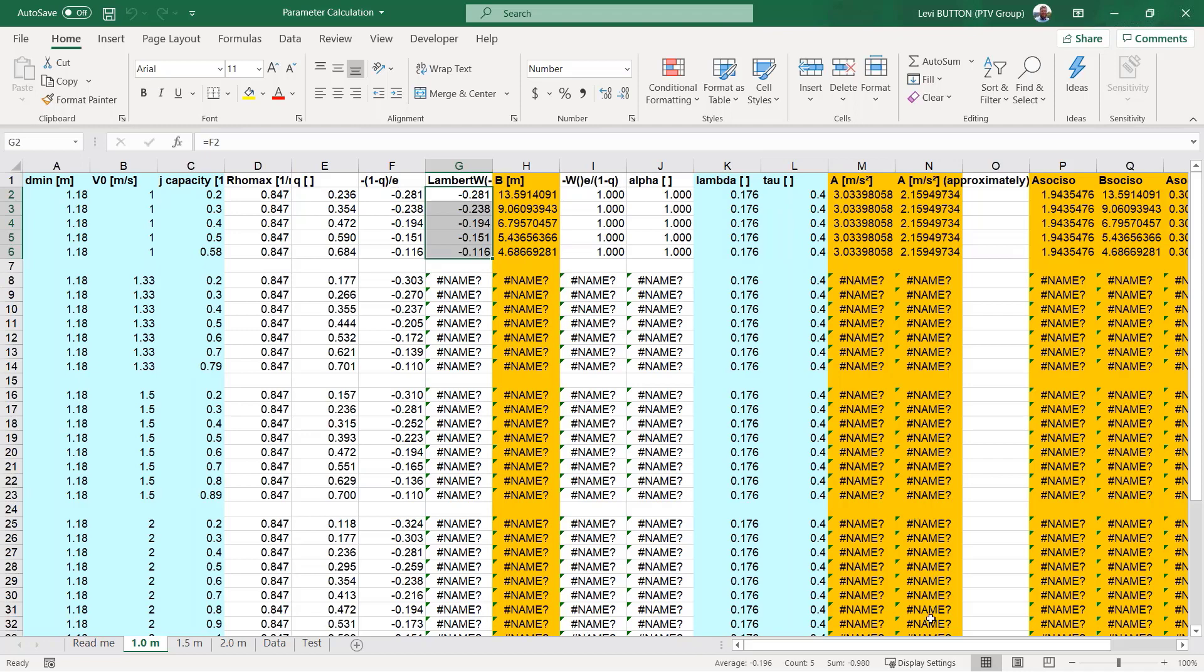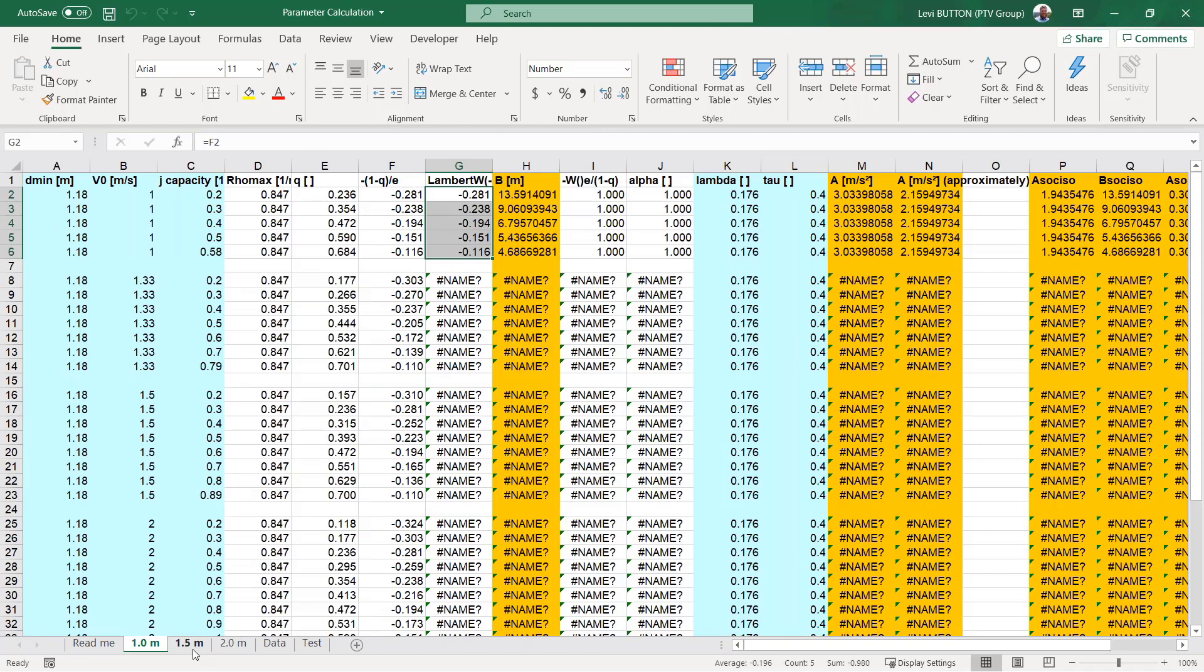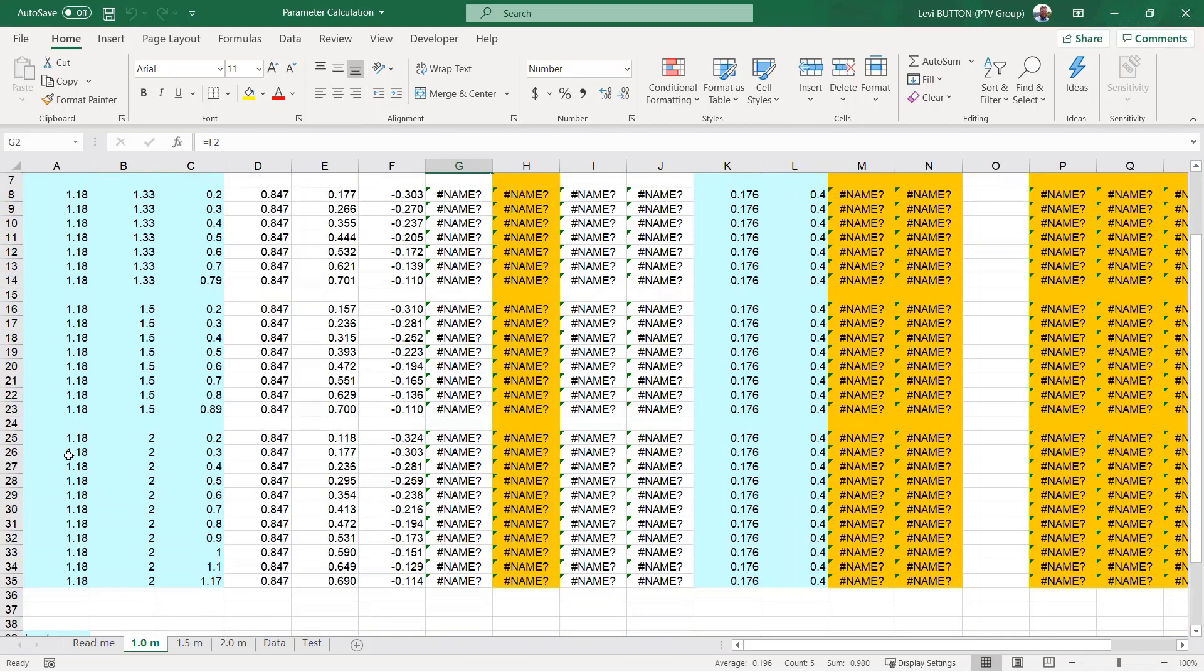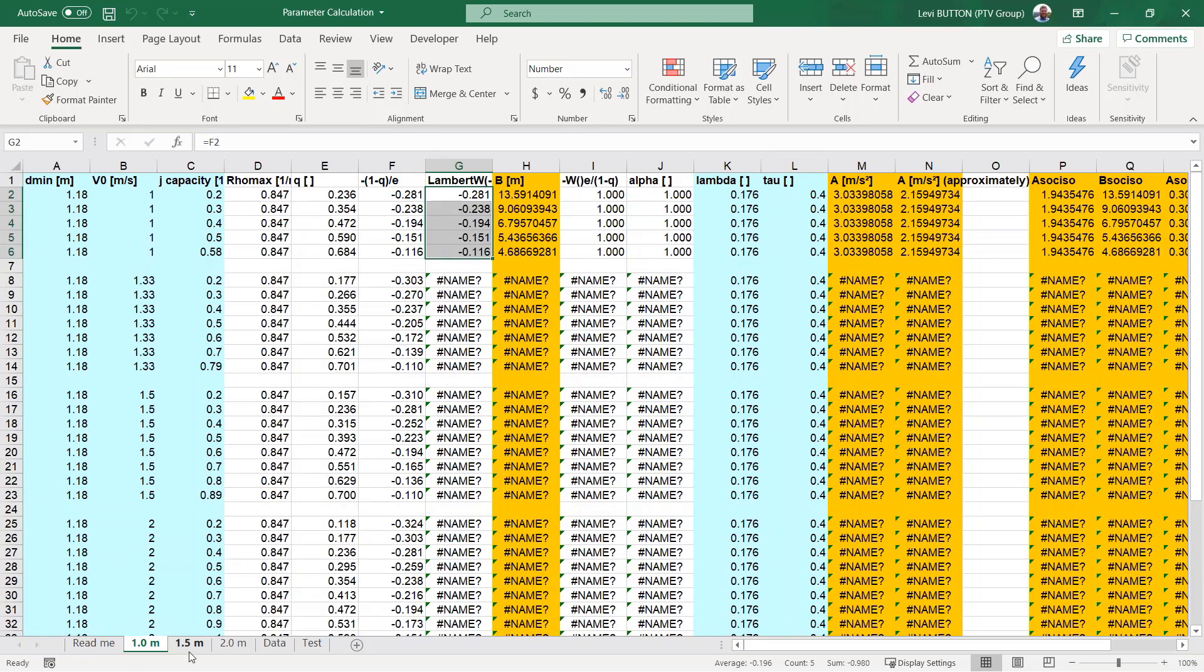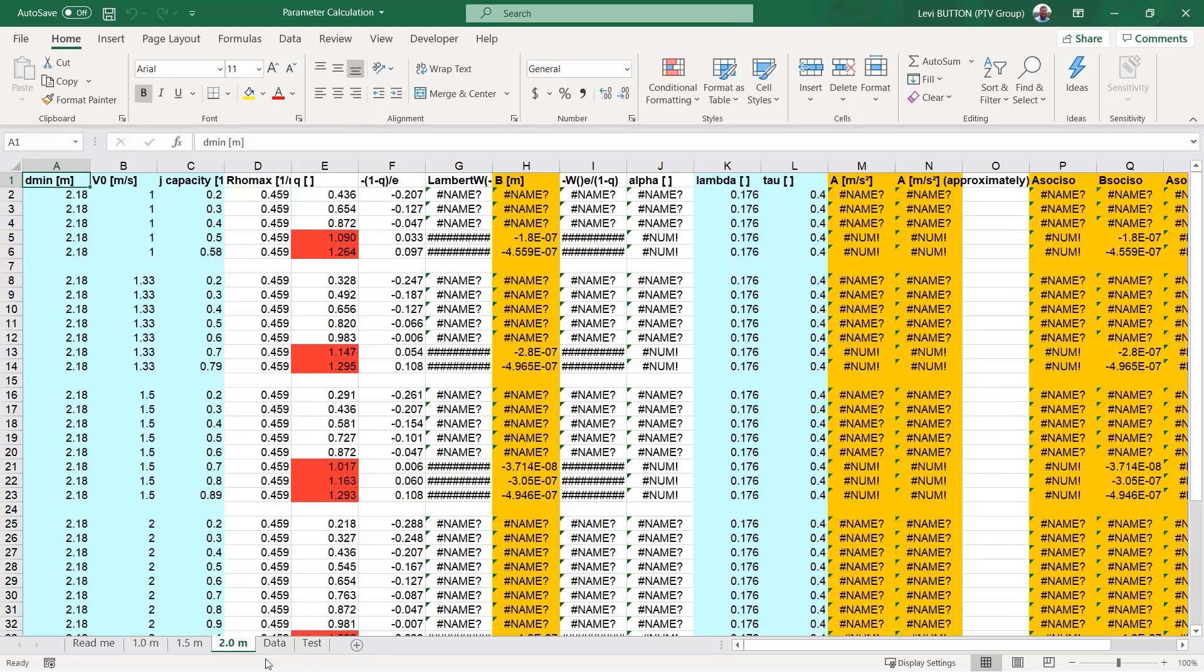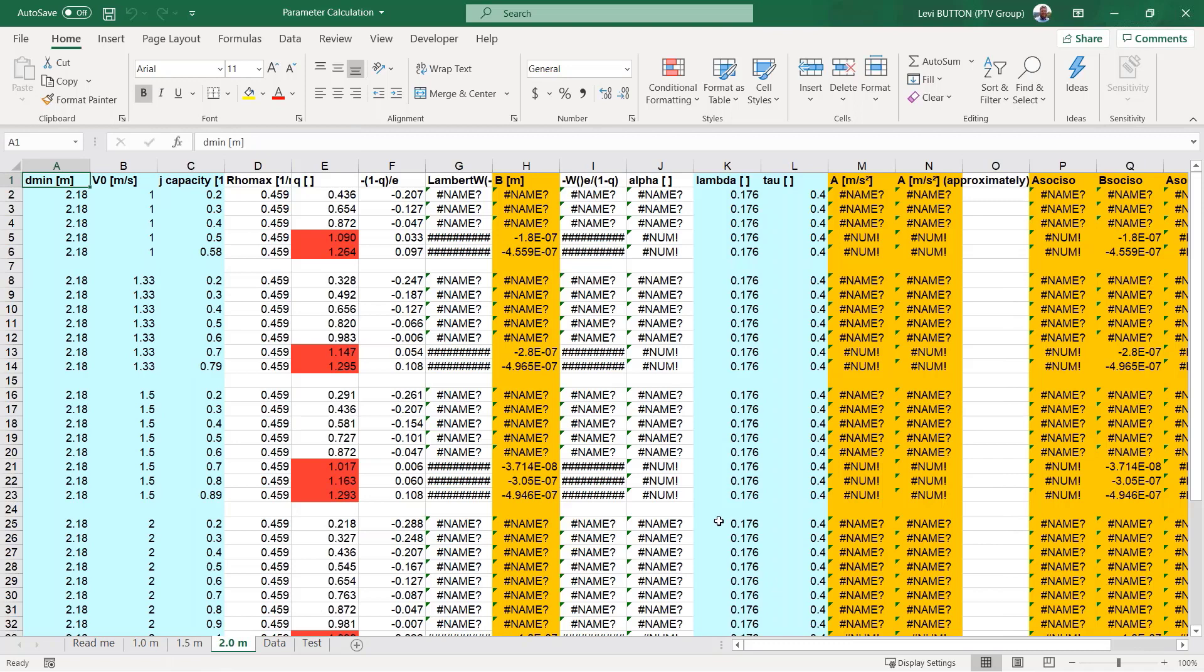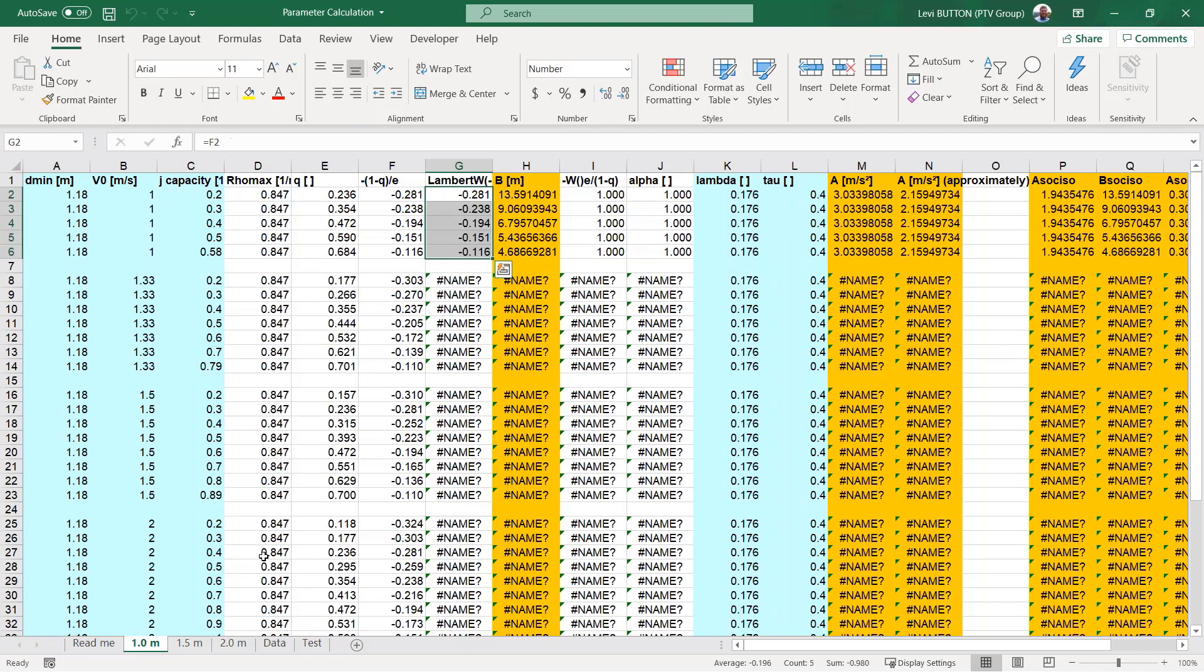And so we can see how it's outputting the data. We have a few different sets of data for different distances. So we have a distance of one meter, 1.5 meters, two meters, and then seeing what the different parameters are looking like as they're coming through the data set.